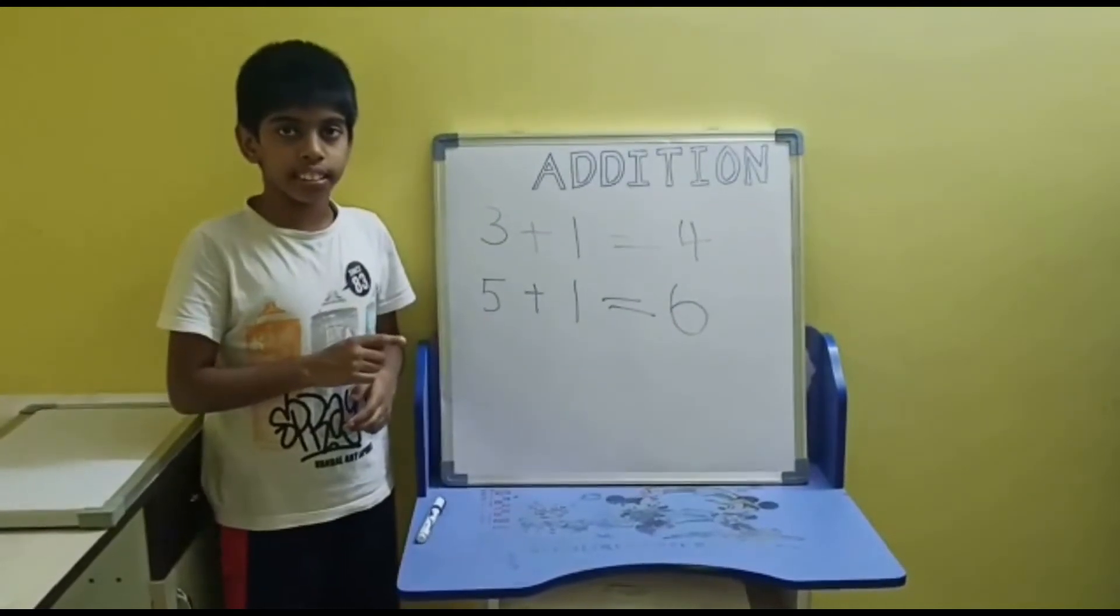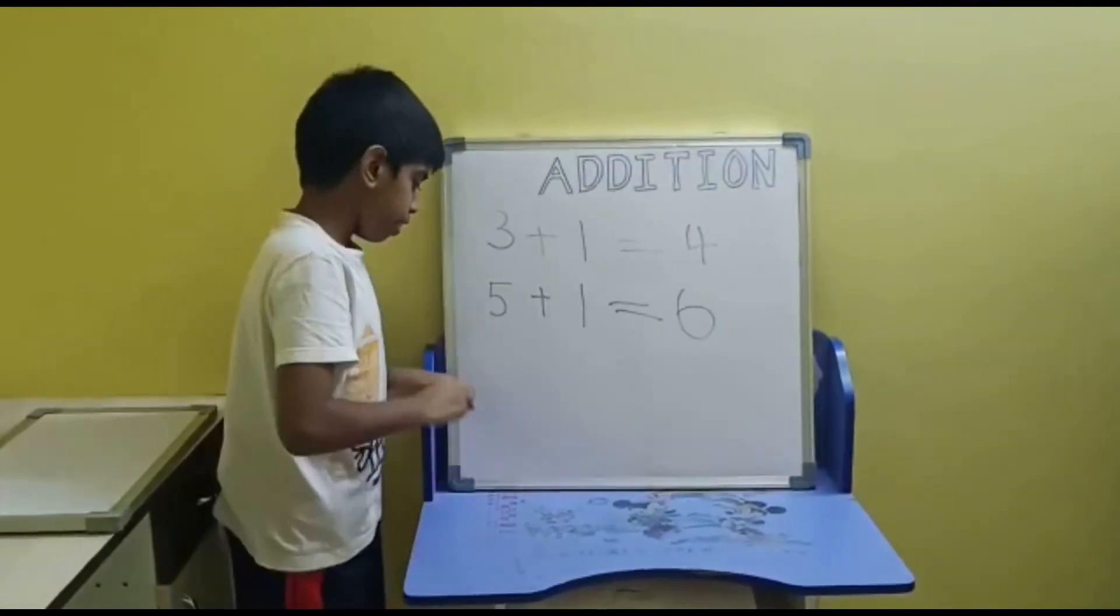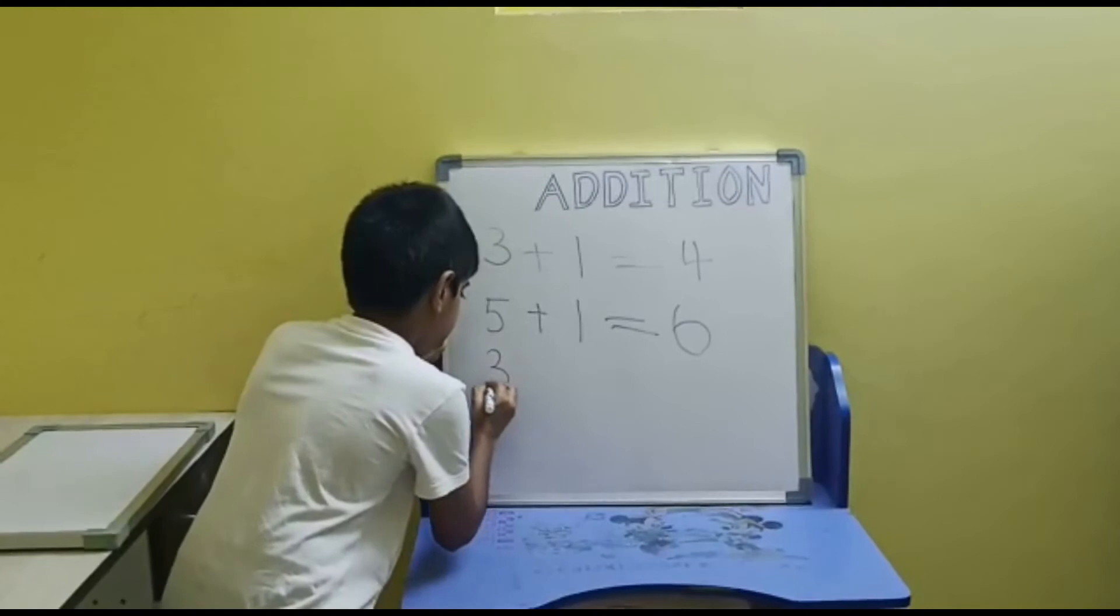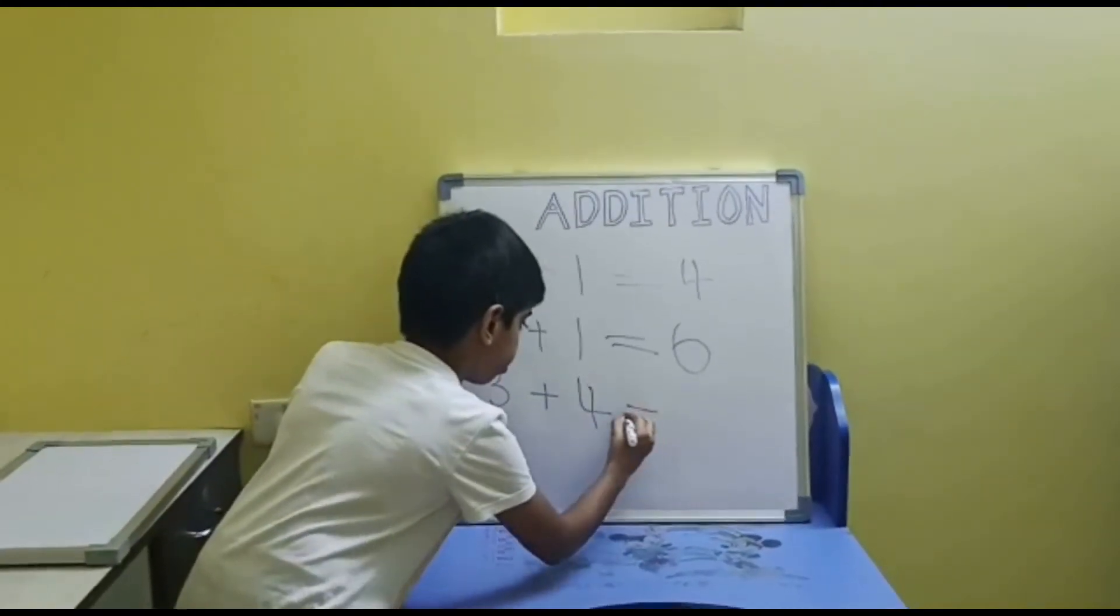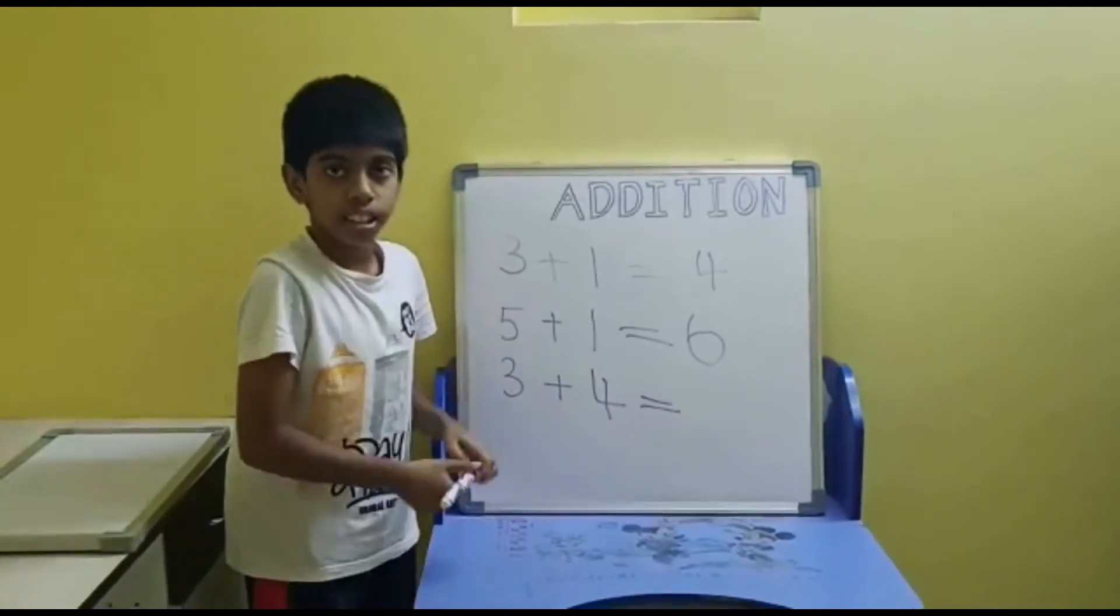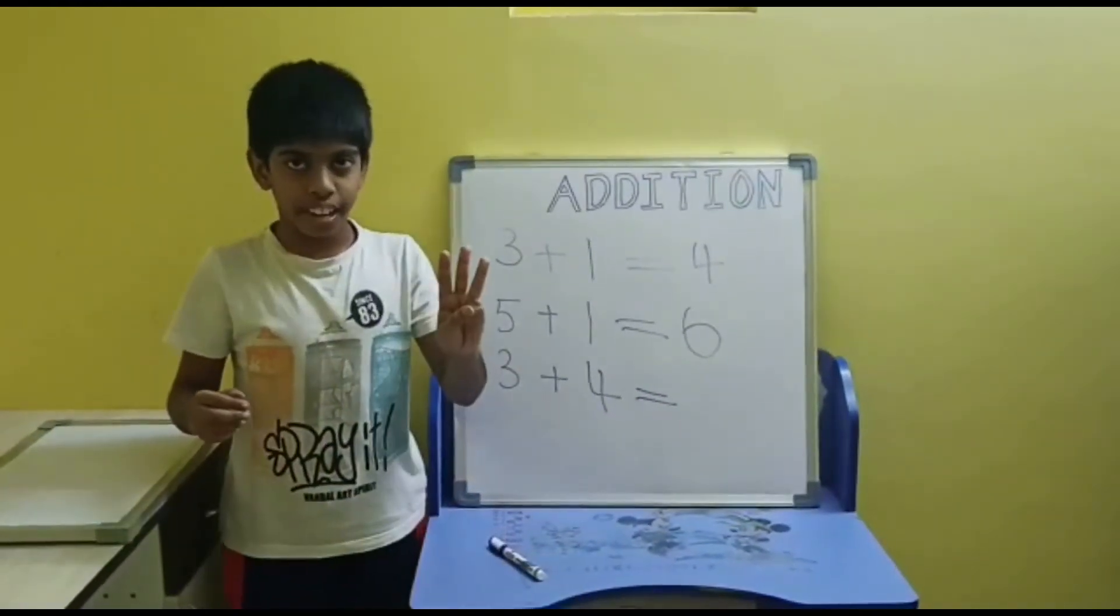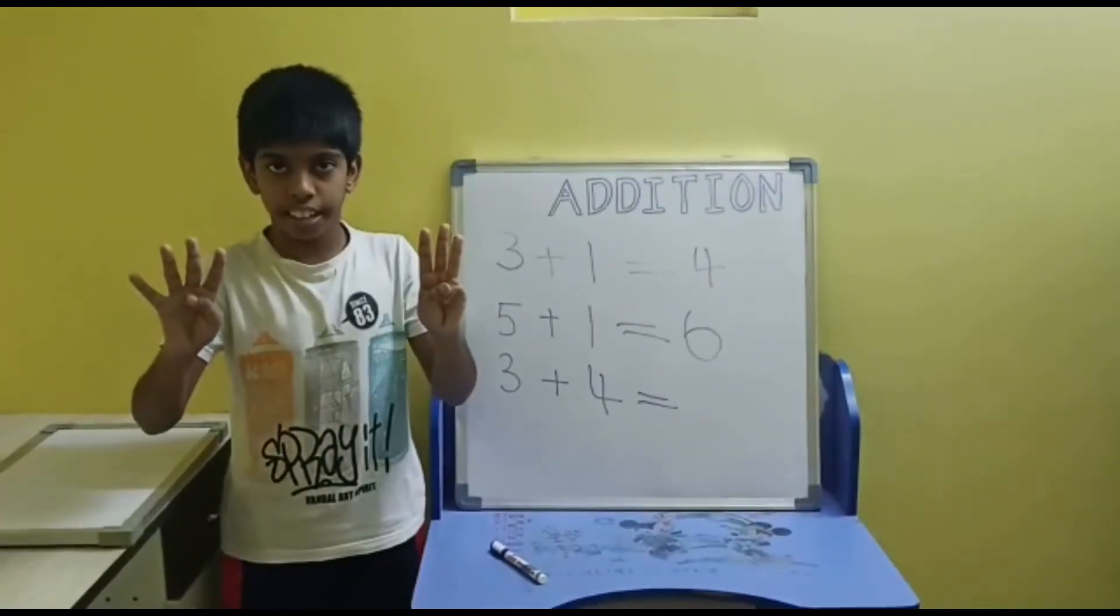The next example. 3 + 4 equals to three in the left hand and four in the right hand.